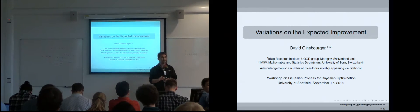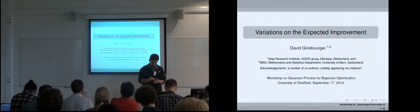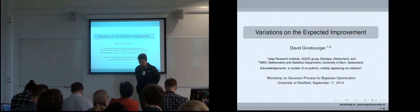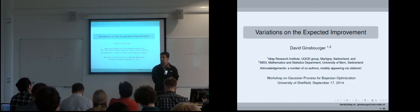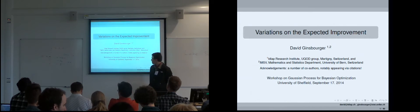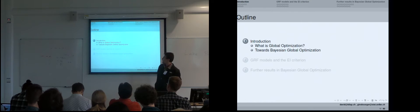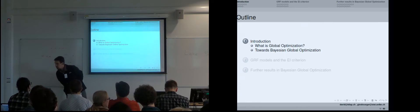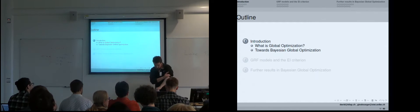Thank you very much for the kind introduction and for the invitation, and thanks to the organizers for this beautiful workshop. I will focus essentially on the expected improvement, which is one particular acquisition function for Bayesian optimization, but we also review some variants of the EI which are adapted for different setups. I start with something about global optimization and Bayesian global optimization, then continue with the EI criterion and take some time to construct and understand the foundation of this criterion, and finally review some further results.